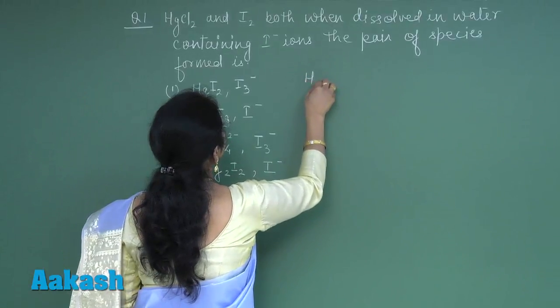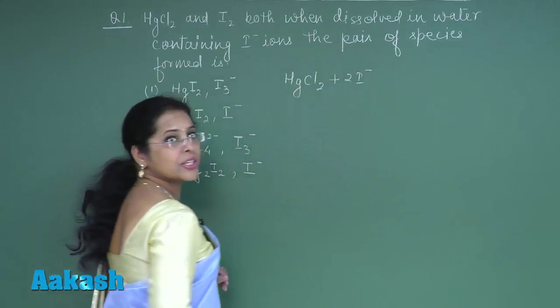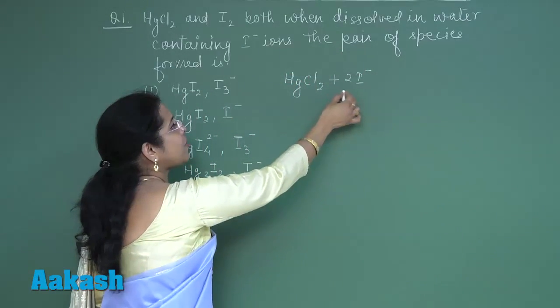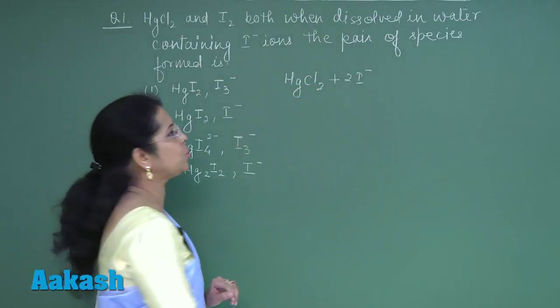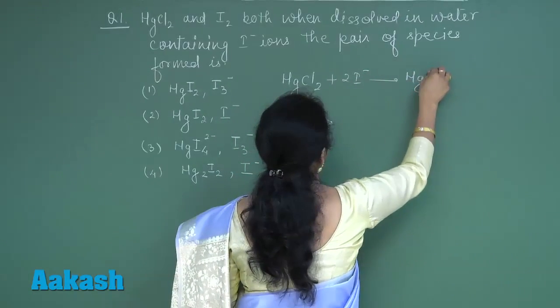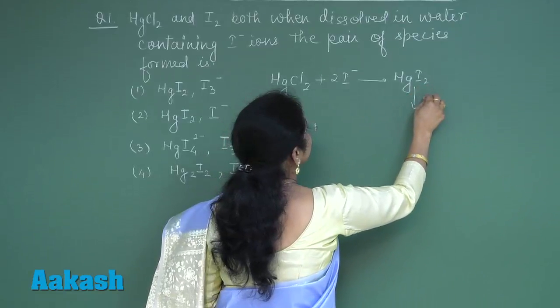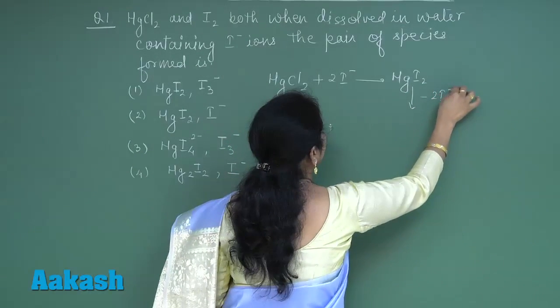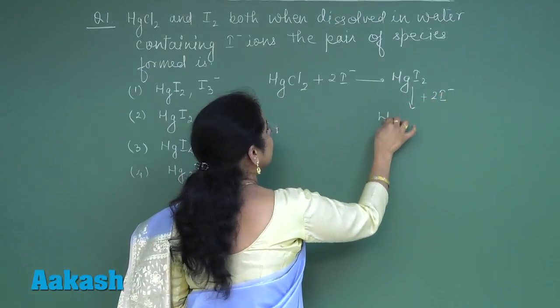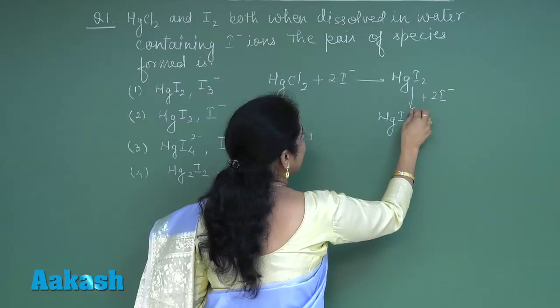Reaction is taking place between HgCl2 and iodide ion. Since nucleophilicity of iodide ion is more than chlorine, it will easily replace chlorine forming HgI2. Further, this covalent compound will react with iodide ion and form complex ion HgI4(2-).